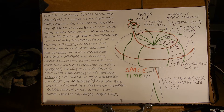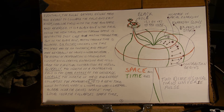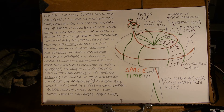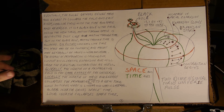The energy of propagation is causing our current accelerating expansion and will cause the eventual contraction as well. Globally, the inertia of the propagating field is the dark energy of the universe. Locally, the inertia of mass and energy collapses the propagating field into a new torus while switching what is linear and lateral. Global inertia drives space-time. Local inertia collapses space-time.